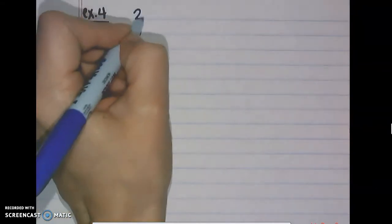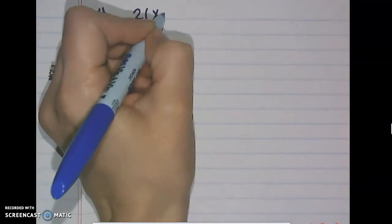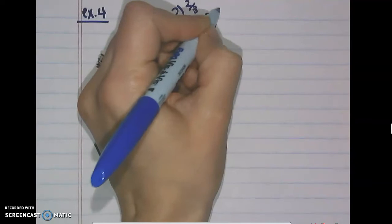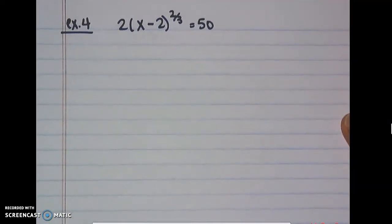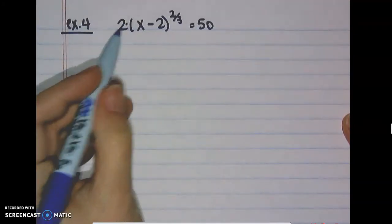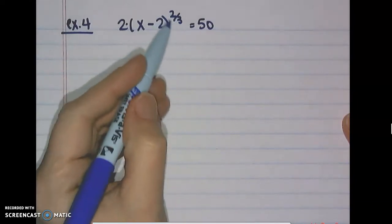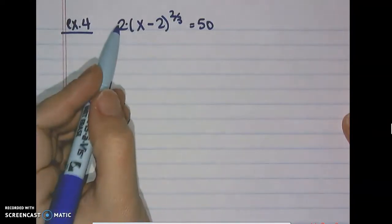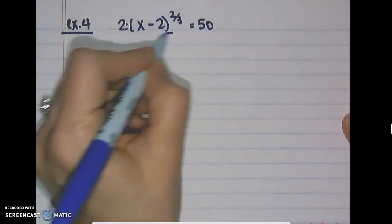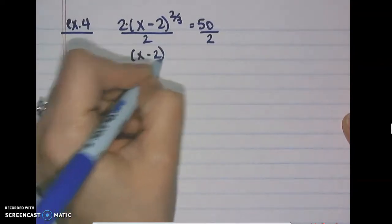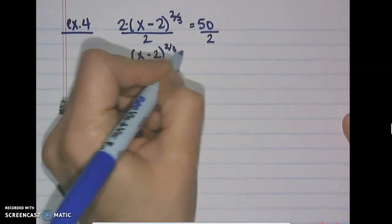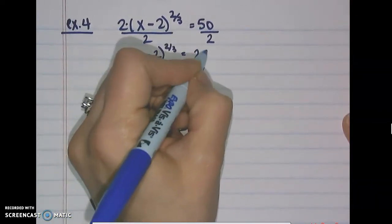We have 2 times the quantity (x minus 2) to the 2/3 power equals 50. We can't distribute the exponent in — remember this is just a radical — so we divide both sides by 2, leaving us with (x minus 2) to the 2/3 power equals 25.